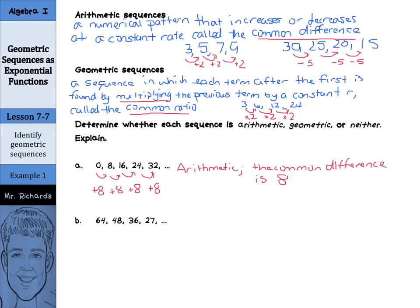What about 64, 48, 36, 27? Let's check to see if there is a common difference, to see if this is an arithmetic sequence. To get from 64 to 48, we subtract 16. From 48 to 36, we subtract 12. From 36 to 27, we're subtracting 9. Since we do not have a common difference, it's not going to be arithmetic.